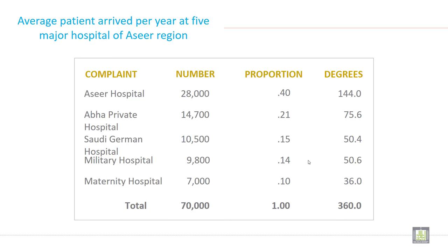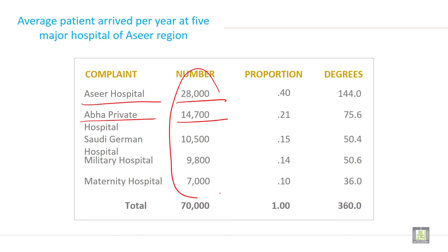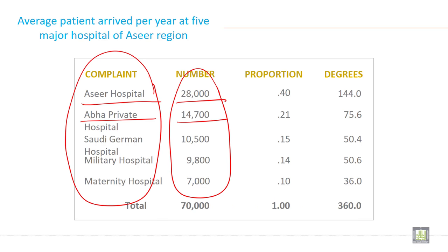Asir hospital had an average number of patients arrived in one year of 28,000. Abha private hospital had 14,700. All these values are called frequency, and the hospital names are called class — specifically, categorical class.